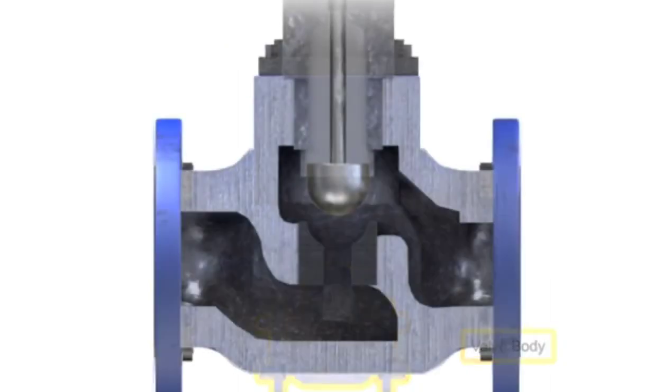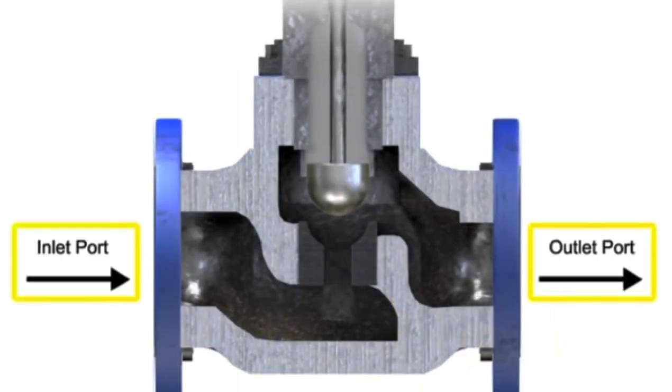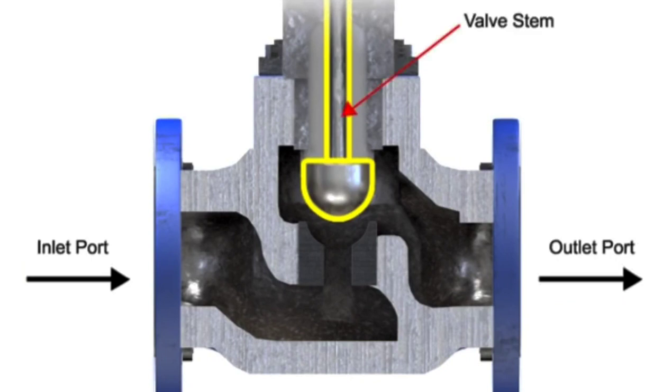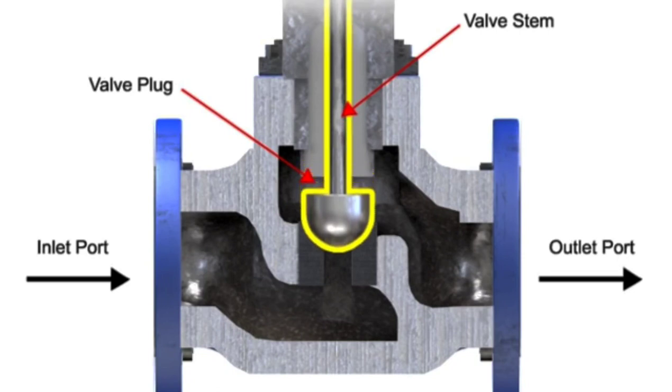The valve body provides the fluid connections and a movable restrictor comprised of a valve stem and plug that is in contact with the fluid that varies the flow. The valve actuator is the component that physically moves the restrictor to vary the fluid flow.